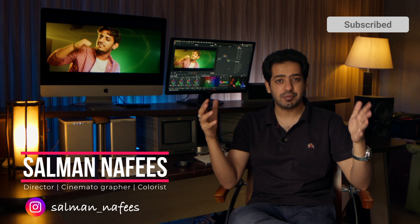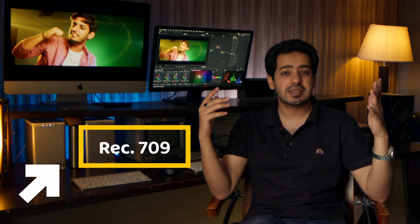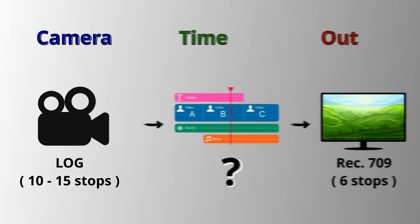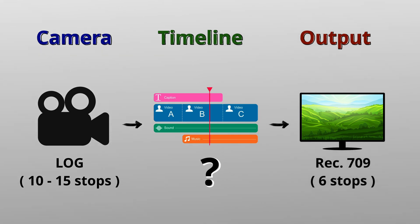To understand what we are doing wrong, we need to know about three key factors in color grading: the color space of your camera, the color space of your timeline, and the color space of your output. In most cases the output color space is rec 709, which is the standard across the world, as most televisions, laptops, mobile screens and platforms can preview colors in rec 709. Log footage normally has a dynamic range of 10 to 15 stops, while rec 709 has around six stops of dynamic range.